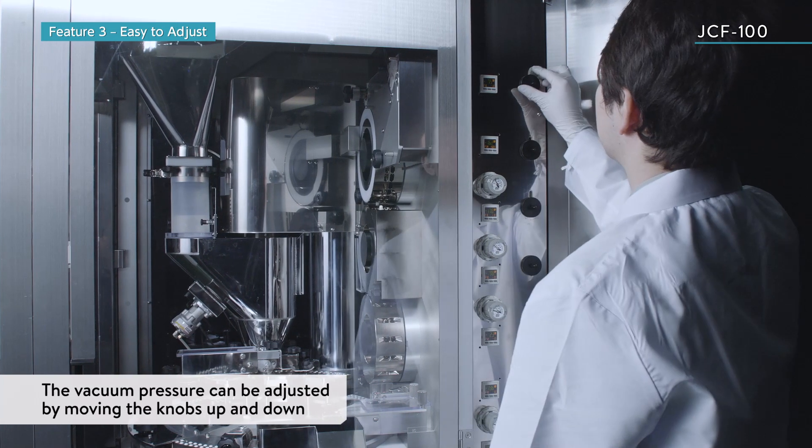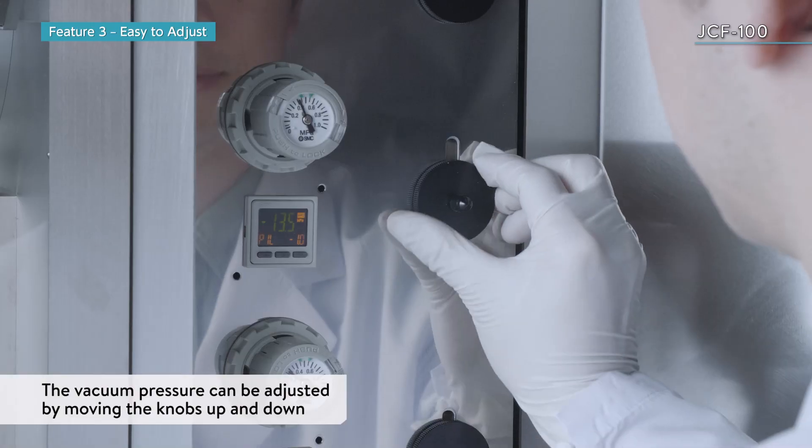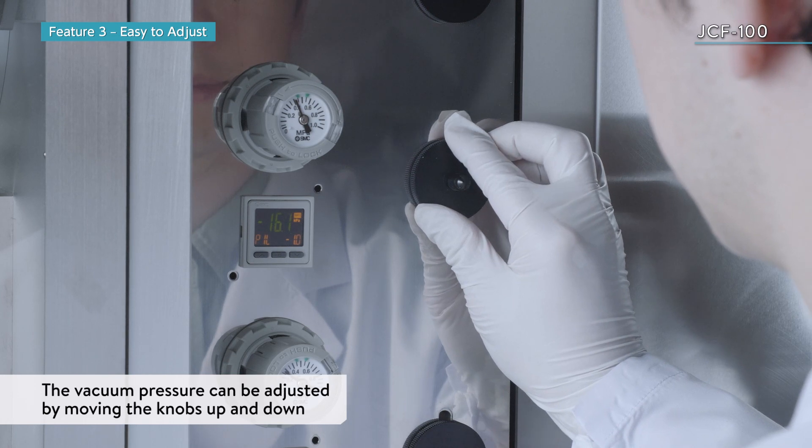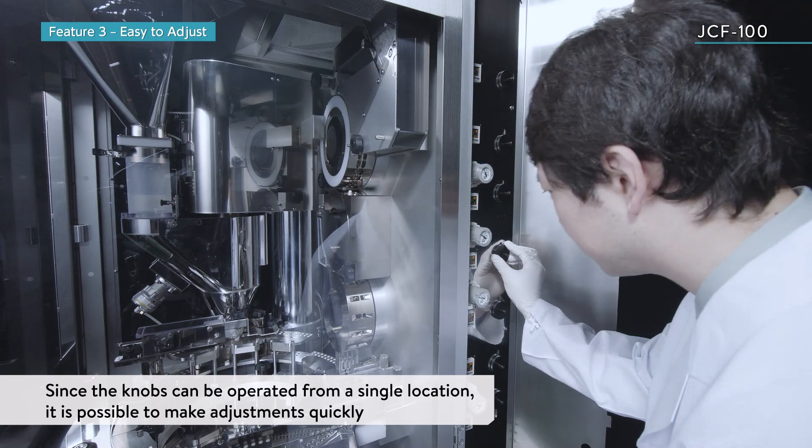In addition, the vacuum pressure can be adjusted by moving the knobs up and down. Since these knobs can be operated from a single location, it is possible to make adjustments quickly.